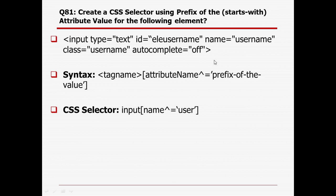CSS selector using prefix — 'starts with': sometimes for a particular attribute, some part is dynamic and some part is fixed. We should use only the fixed part since the dynamic part can change any time. Syntax is: tag name, then [attribute^='prefix_value']. Tag name is 'input', attribute is 'name', using '^=' and starting with 'user'. Maybe name can change to 'user_id', but 'user' is the fixed component, which is why we use the start-with option.